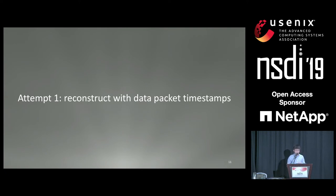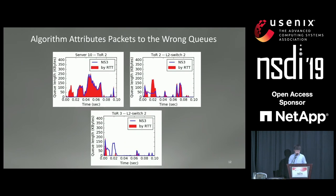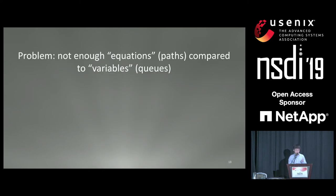Our first attempt was to reconstruct the queuing delays using data packets — the packets generated by the applications. Looking at three queues from a simulation, with the blue curve as ground truth and red filling as reconstruction results, we see that sometimes the reconstruction matches ground truth pretty well. However, other times the algorithm attributes delays to the wrong queues. This is because with only data packets, there are not enough equations compared to the variables — many packets pass through the same path since packets from the same flow take the same path, so path coverage in the network is not sufficient.